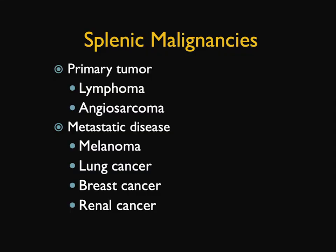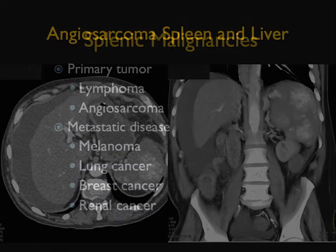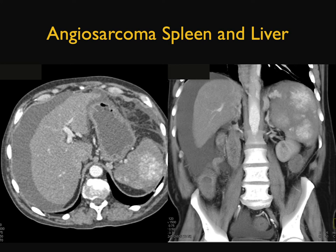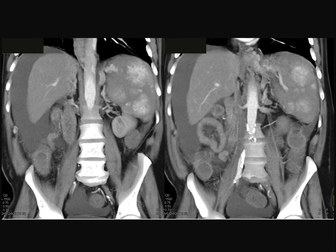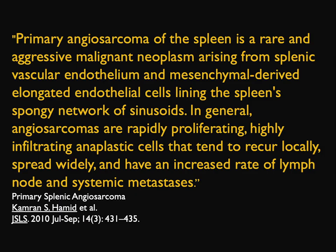What about malignancies? There are two main primaries: lymphoma is the most common, and then angiosarcoma, which is exceedingly rare — something we speak more about than see. And then of course, metastasis. Angiosarcomas are very vascular lesions with marked irregularity, ascites, and carcinomatosis. Angiosarcomas can spontaneously bleed, and you can see the extensive irregular enhancement. Angiosarcoma is a rare and aggressive malignancy — rapidly proliferating, highly infiltrative tumors that spread quickly.